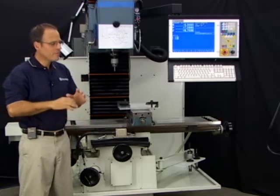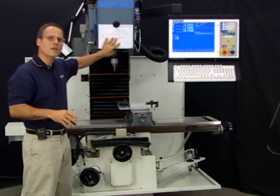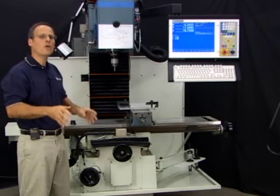That's step number one. So before you do anything, right now decide by looking at the print where you're going to make your part zero position.